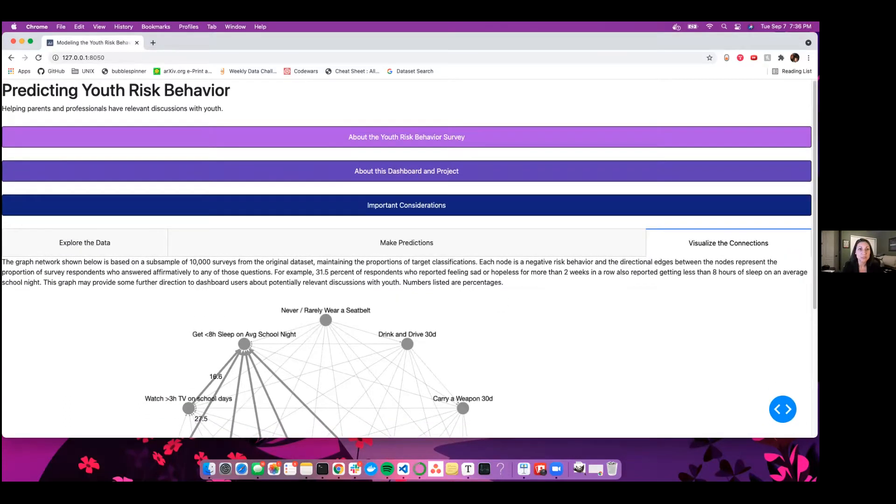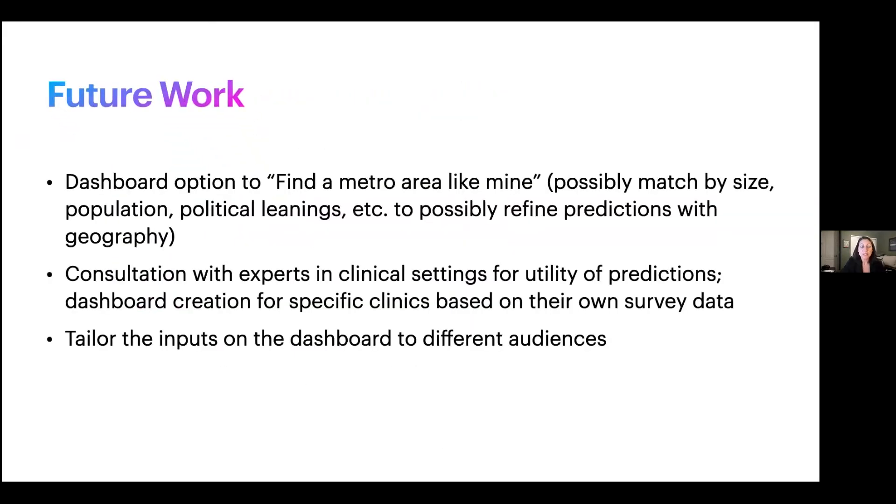And now back to the presentation for some future work. In the future, I think there are a lot of applications for this dashboard, as I've mentioned. I'd like to add a feature that would find a metro area like mine. I mentioned that they give the survey in 35 different districts around the country. And I think that given different political leanings or different population size, things like this, we might be able to get a little bit better scores from the indicators if we narrowed it down by geography. I'd like to consult with some experts in clinical settings for the utility of these predictions, and even create specific dashboards for clinics based on their own survey data and their own geographic areas, and then tailor the inputs on the dashboard to different audiences.